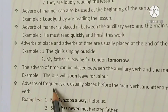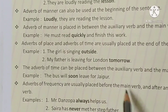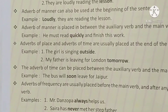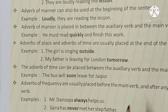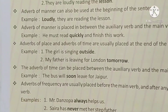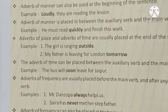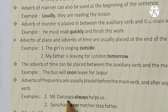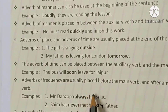Next: adverbs of frequency are usually placed before the main verb and after any auxiliary verb. Adverb of frequency usually main verb के पहले use होता है और किसी भी auxiliary verb के बाद। Example: 'Mr. Danzopa always helps us.' यहाँ 'always' main verb के पहले use हुआ है।